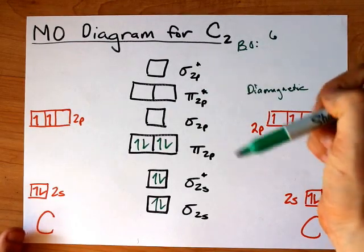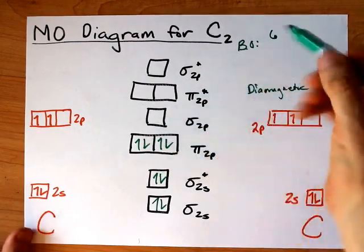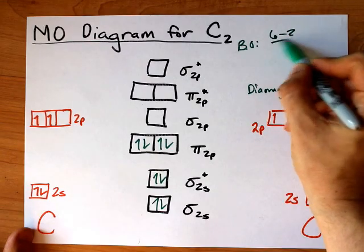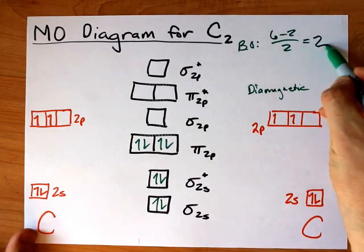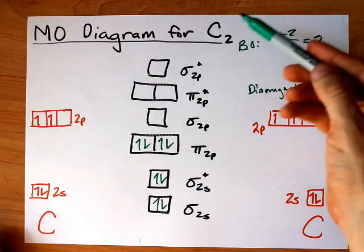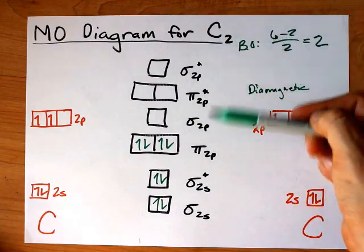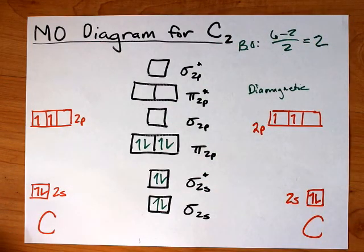Minus the number of electrons in antibonding orbitals. That's one, two. And then I divide that by two. Six minus two over two gives me a bond order of two. And that tells me that C2 should have a stable double bond holding it together.